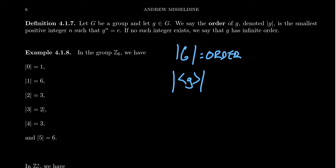We denote this as the order of little g. This is going to be the order of the cyclic subgroup generated by g. An equivalent way of defining that is that the order of little g will be the smallest positive integer n such that g to the n is equal to the identity of the group.